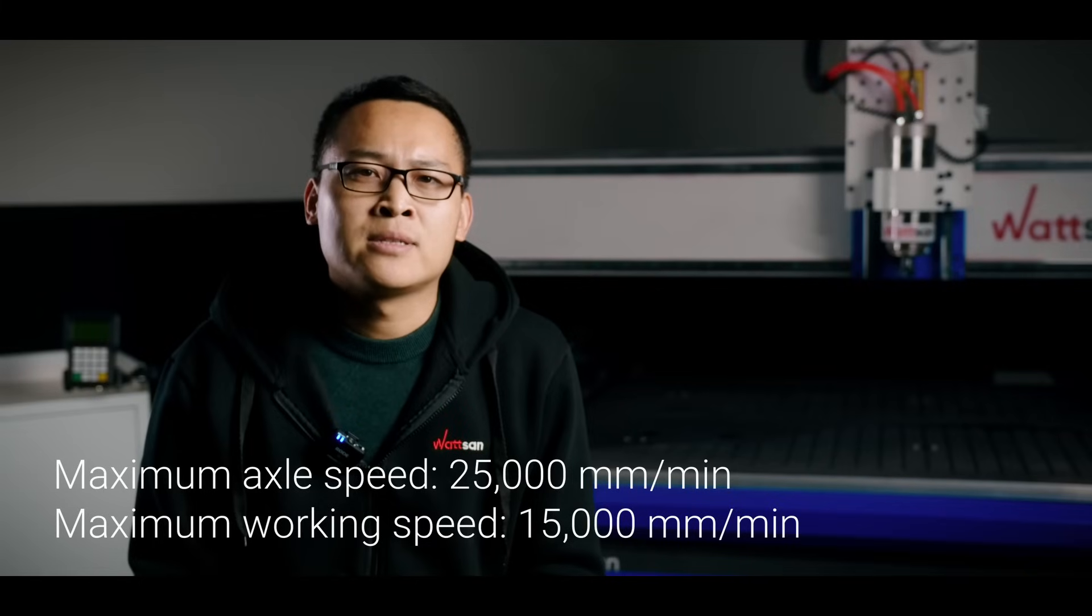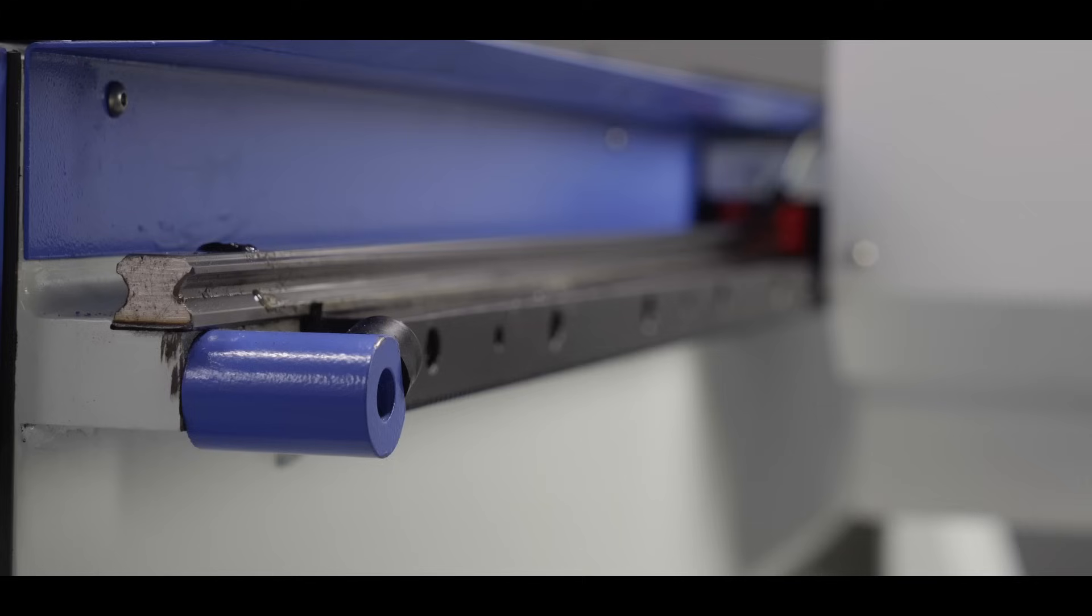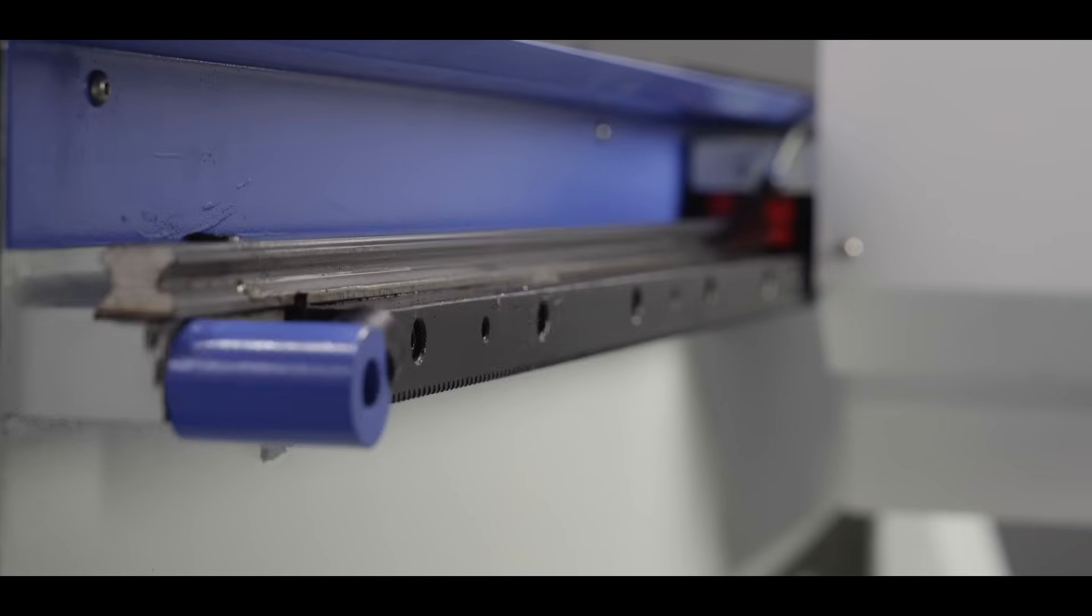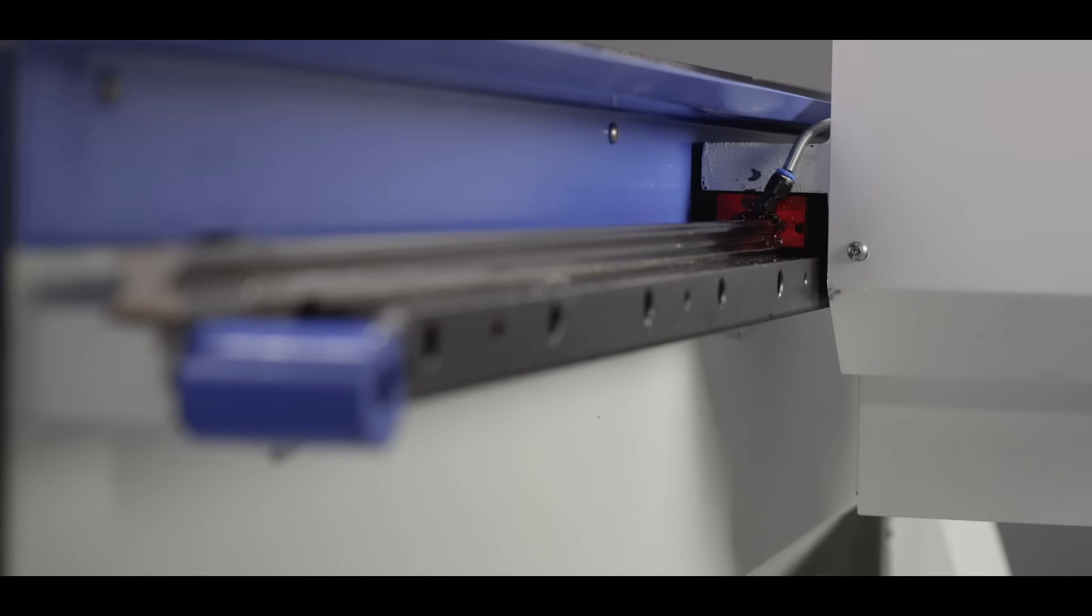Positioning accuracy is 0.05mm. To guarantee Swiss watch precision, all the guide rails and helical racks are robotically milled and ground.